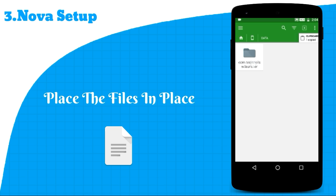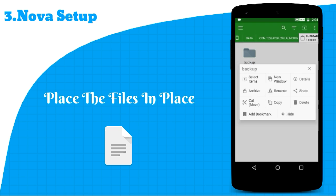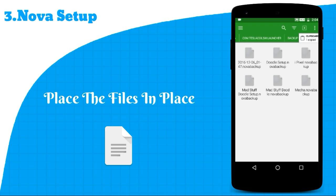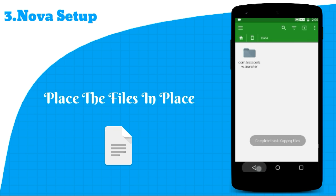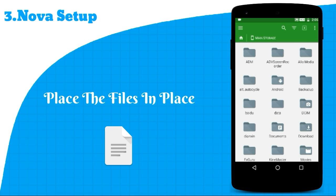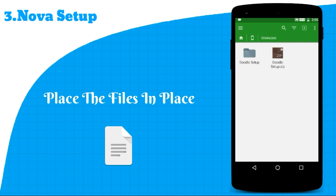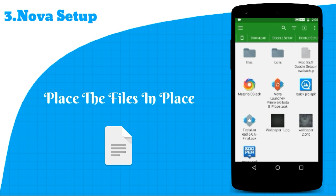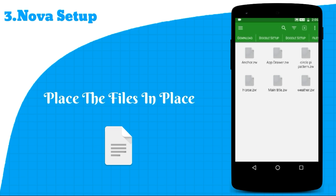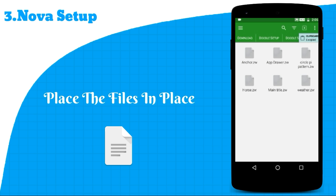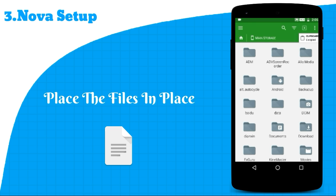I don't know what's wrong with Nova developers — why do they use nested folders or directories? Maybe they've gone crazy or something. Anyway, go into the zip folder, copy all four .zw extension files from the folder named 'files', and paste these files in the KWGT template folder.